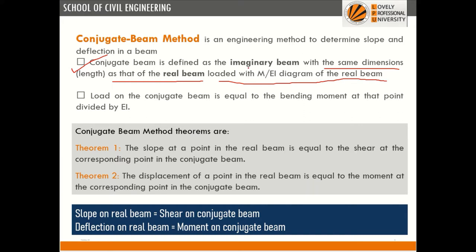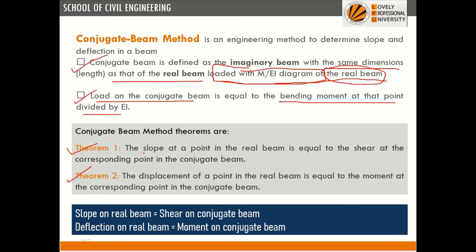The load on the conjugate beam is the bending moment diagram divided by EI of the real beam. There are two theorems: the first is for slope and the second is for deflection.